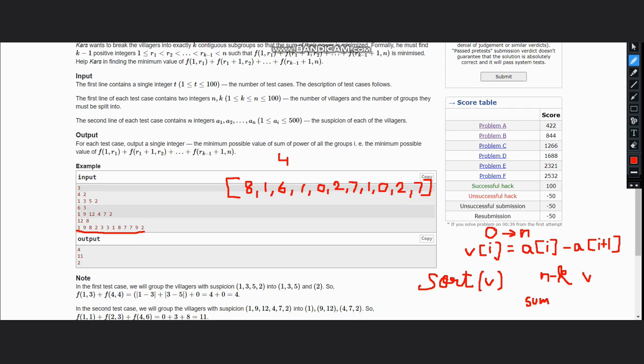Then 3 minus 1 is 2, and 1 minus 8 is 7. Like this, I have written the whole list. Now what we need to do is sort this.